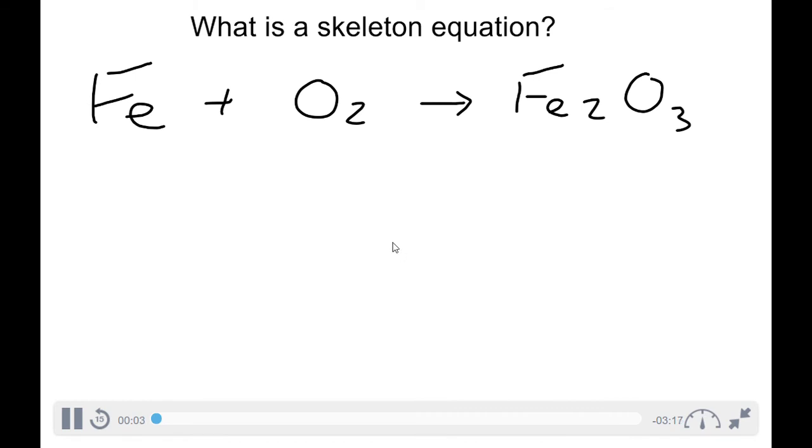Below is the skeleton equation for the rusting of iron. All chemical reactions can be described by a skeleton equation. The skeleton equation describes how the particles of the reactants rearrange to form new particles called the products.